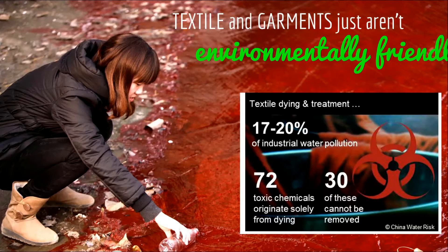One of the biggest issues from the industry is pollution. 70 to 20% of industrial water pollution comes from textile dyeing and treatment, creating 72 toxic chemicals originating solely from dyeing, of which 30% cannot be removed. The river water in the picture is red — and if you've visited Ho Chi Minh City, you can see that in many areas the river is actually black.